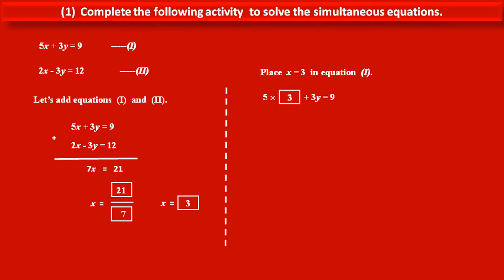So equation 1 becomes 5 into value of x as 3 in box, plus 3y as it is, is equal to, in the right hand side, 9 as it is.